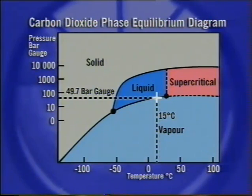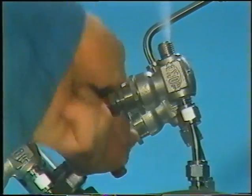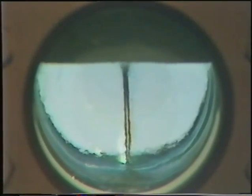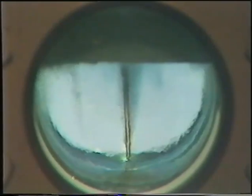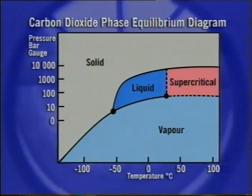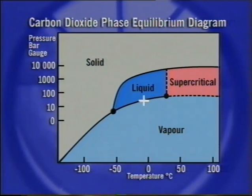The vent valve is now open to release CO2 vapor into the space above the liquid. The pressure and therefore the temperature of the liquid CO2 falls rapidly as it boils to produce more vapor. As the pressure and temperature decrease, the conditions are represented by a different point on the liquid-vapor equilibrium line, once again indicated by a cross.